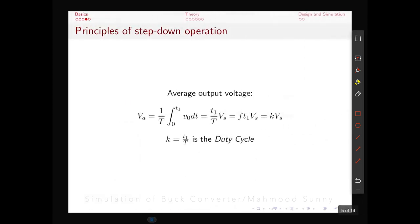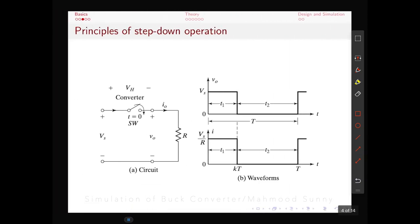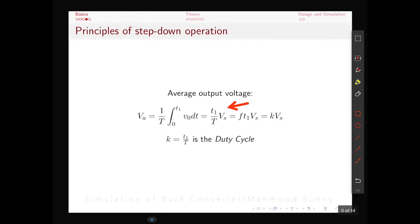The average output voltage can be calculated. If we integrate the output voltage from time 0 to T1 then we get this formula. Because when the switch is closed the output voltage is equal to the input or supplied voltage. The term T1 divided by capital T is also called the duty cycle which is represented by the term K.